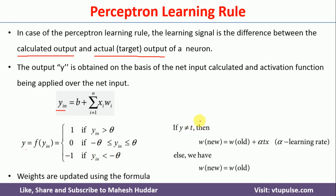We update the weights based on what we calculated and what the actual target is. If they are not the same, we update the weights; otherwise, we do not. If the calculated output is not equivalent to the target, the new weight equals the old weight plus alpha * t * x, where alpha is the learning rate, t is the target, and x is the input. If both are the same, new weight equals old weight.